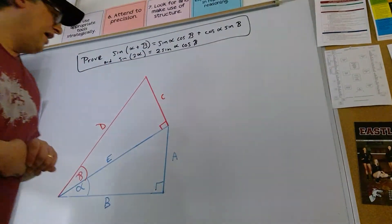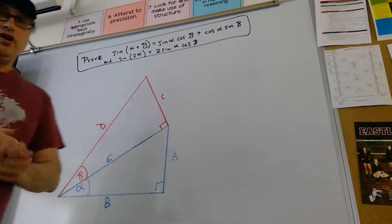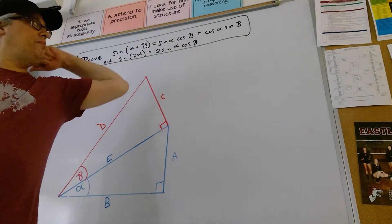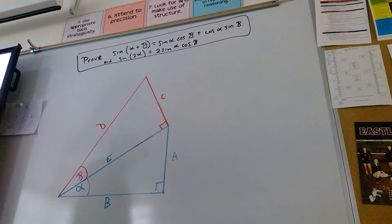Hello everybody, Mr. Emerson here, and today we've got a nerdy two-for-one special. Our goal today is to prove that sine of alpha plus beta equals sine alpha cosine beta plus cosine alpha sine beta, and for free, almost, we get sine of two alpha equals two sine alpha cosine beta.